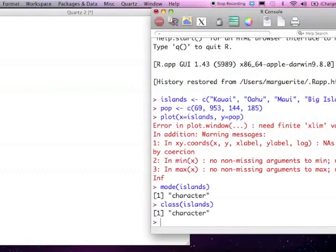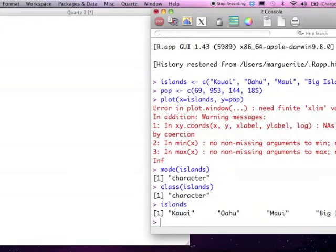So what we need to do is convert this into a factor. If we just look at what it looks like, you see it's just a character string vector. So it's a pretty simple thing to convert it into a factor. You just use the factor function.